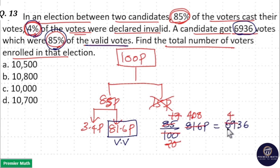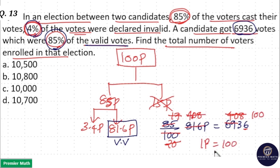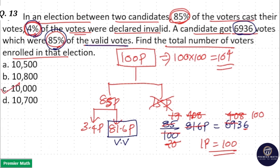Continuing the division: 17 goes 8 times into 136, confirming the calculation. We find that 4.08 goes 100 times into 408, meaning 1 part equals 100. Therefore, 100 parts equals 100 multiplied by 100, which is 10 to the power of 4, that is 10,000. So the total number of enrolled voters is 10,000 — option C is the answer.